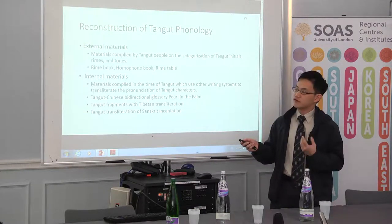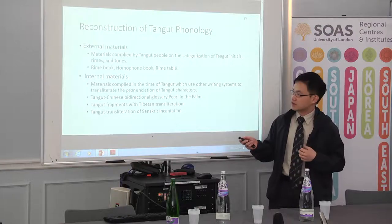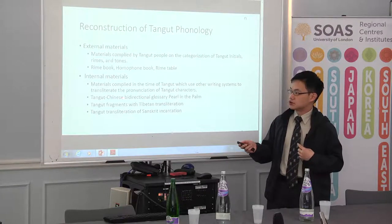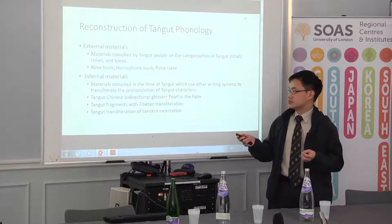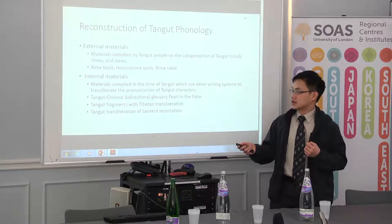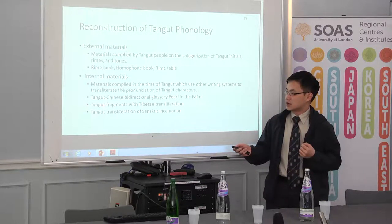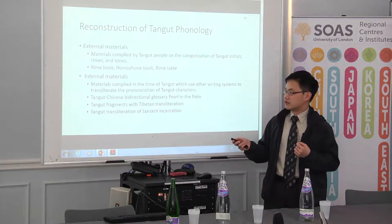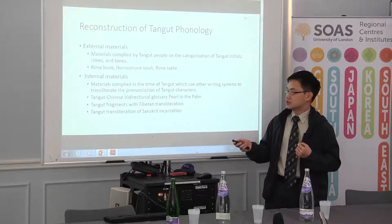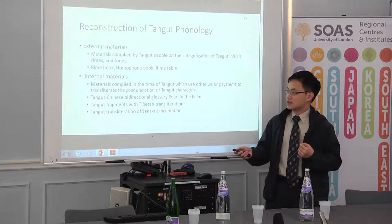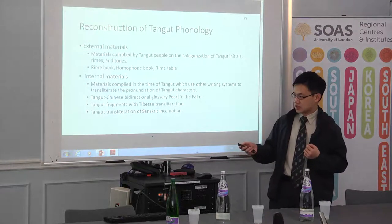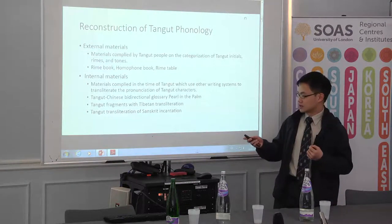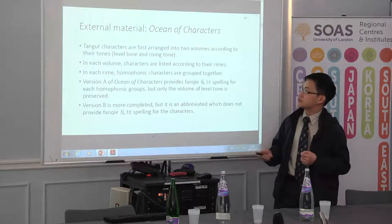There are three major kinds of internal materials. One is the very famous Pearl in the Palm, zhang zhang zhong zhu. The second one are the Tangut fragments with Tibetan translation, and the third one are Tangut translations of Sanskrit inclination.